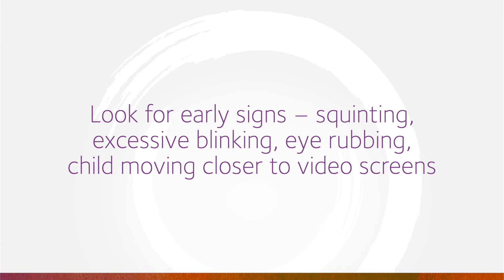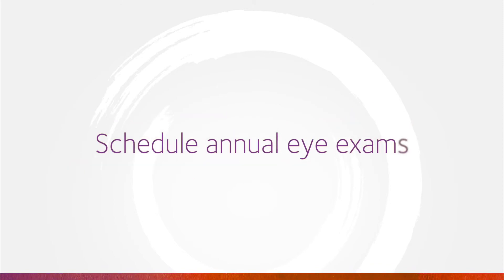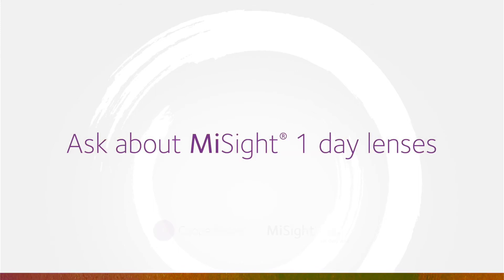Now that you've learned how myopia progression can impact the quality of life in children, be sure to do something about it. Always be on the lookout for early signs of myopia and schedule an appointment with the doctor right away if you suspect an issue. I always recommend scheduling regular annual appointments with your eye care professional. And lastly, stay current on the developments of myopia management, such as the MiSight one-day contact lens, the only FDA-approved contact lens to slow the progression of myopia in children eight to twelve years old at the initiation of treatment.